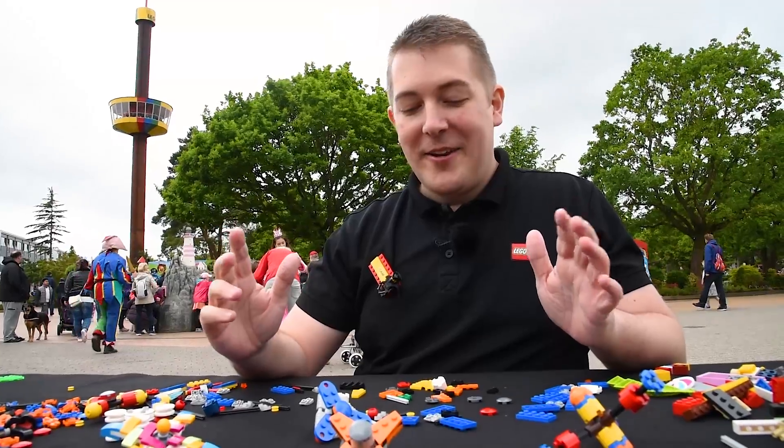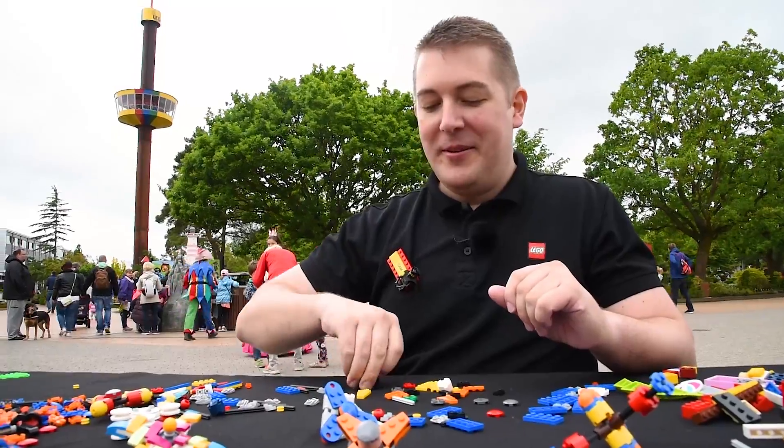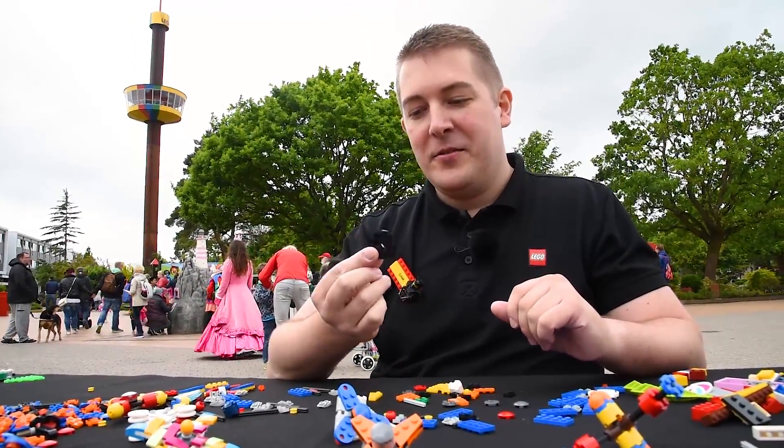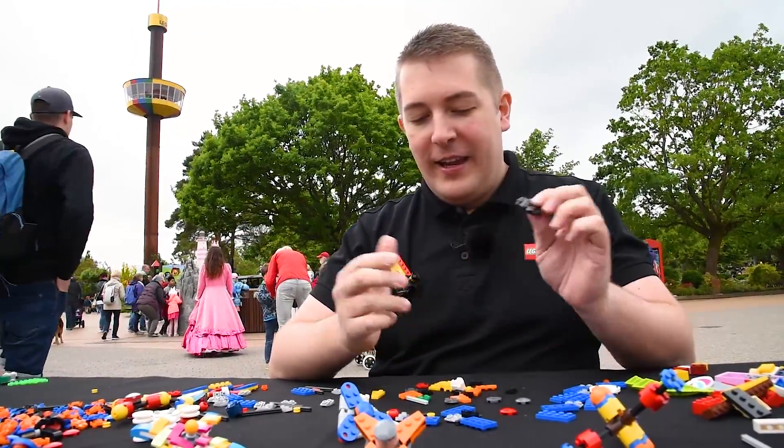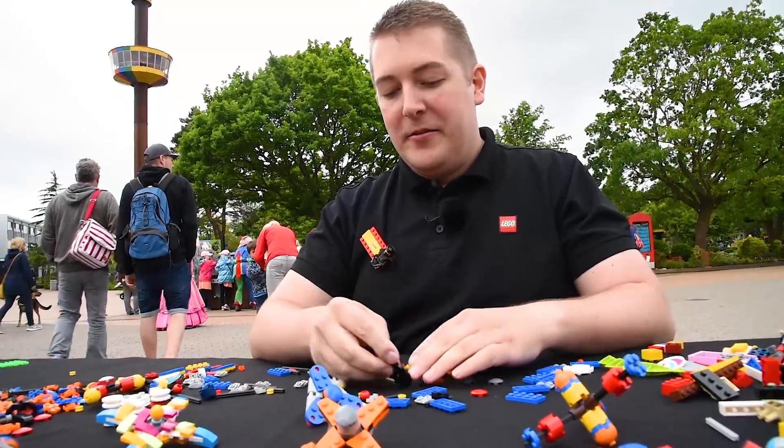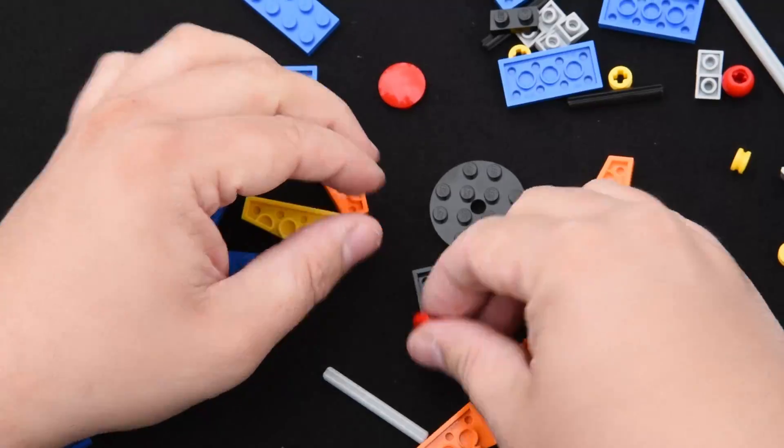So I'm going to build today a Lego fidget spinner and we're going to start with this one here, this is a 4x4 black round plate, any color you like, we just put that down here and then we can use this red one and put it like that.